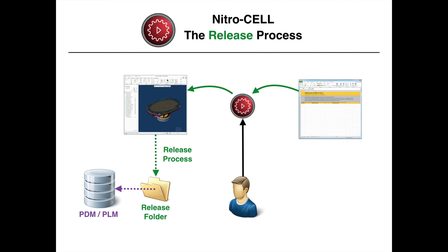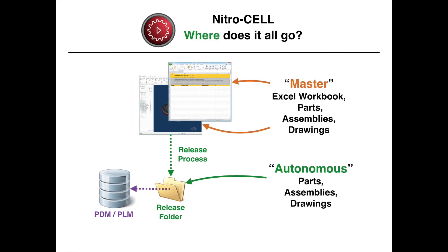The next big question is: okay, this is wonderful, but what do I do with all this stuff? Where does it go and how do I deal with it? The masters that you create — meaning the Excel workbook, the parts, the assemblies, and the drawings — are the corporate knowledge, and corporate knowledge will have version changes just like everything else. Your release process will generate autonomous models. All of that stuff typically goes into the PDM and PLM system, and you can do exactly the same with your master CAD geometry as well as your knowledge or logic — meaning the Excel document. So all of this can go into the PDM and PLM system and be managed independently, with your knowledge having changes over time just as your models do. This is where it all goes, this is how it all fits together, and from here on out it's all about how to use this tool.